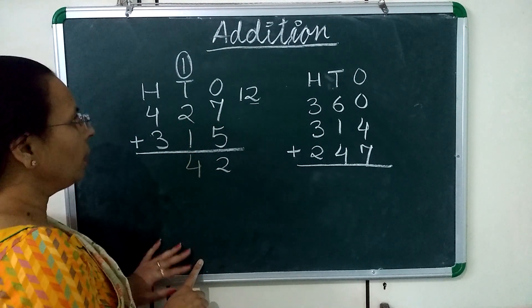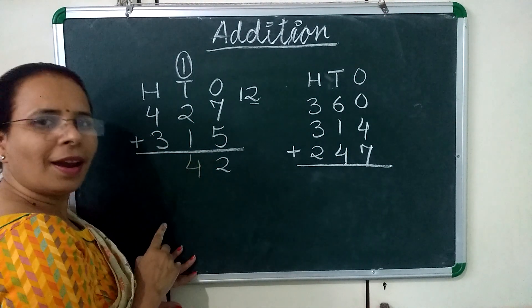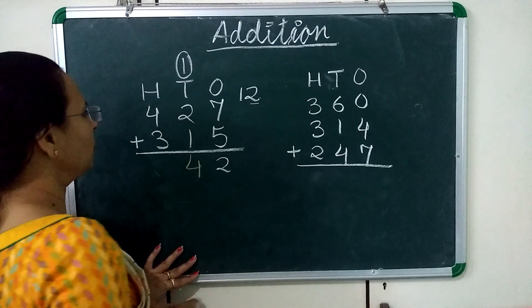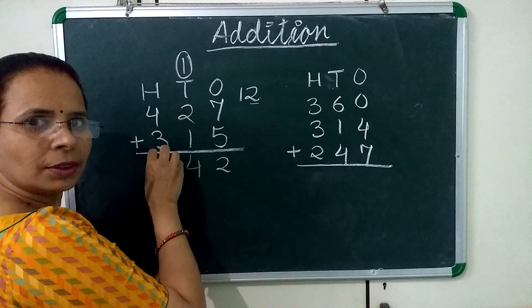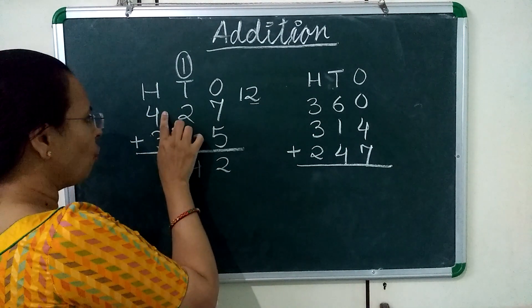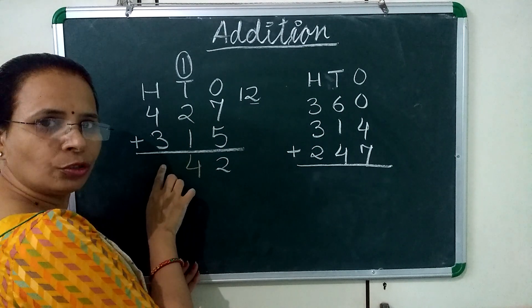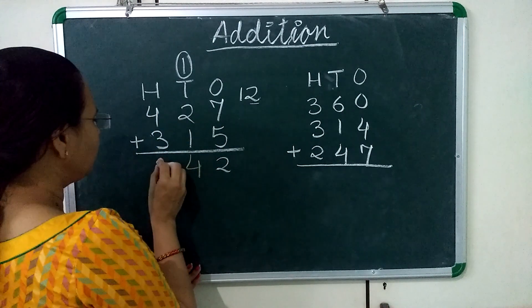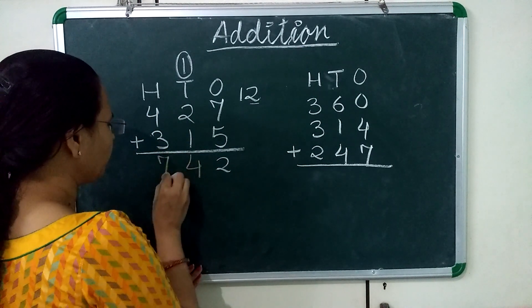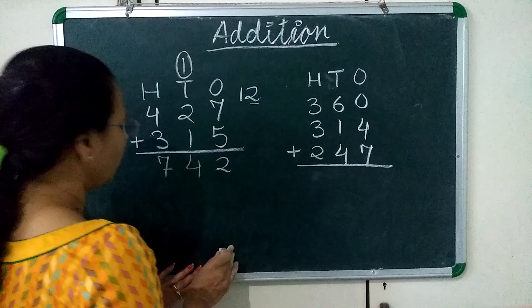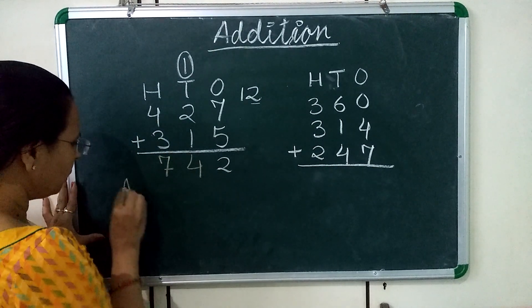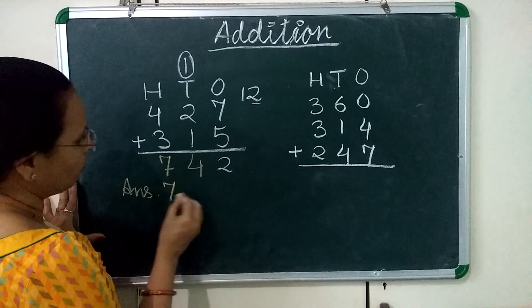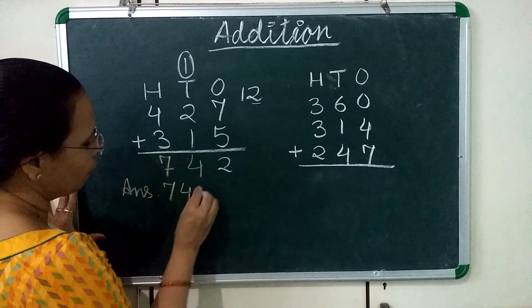Now we will move to the 100's place. The 100's place numbers are 4 and 3. 4 plus 3 is 7. So our answer is 742.